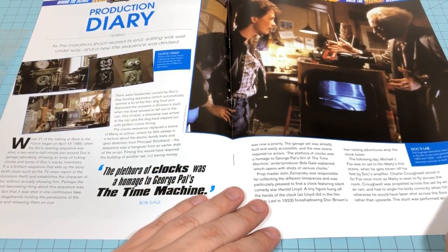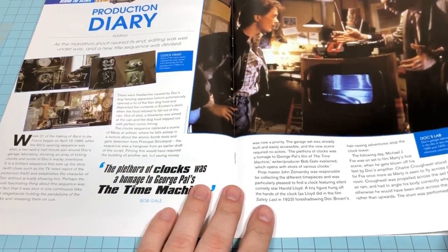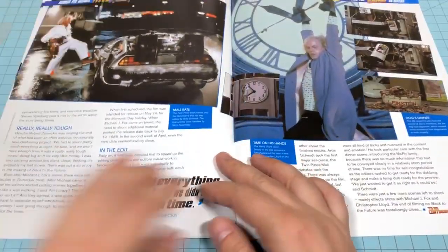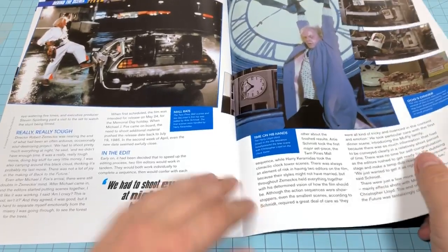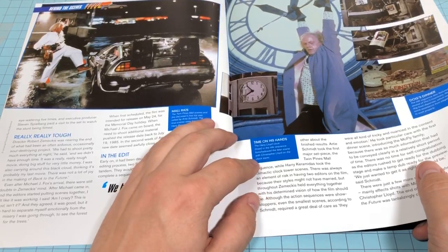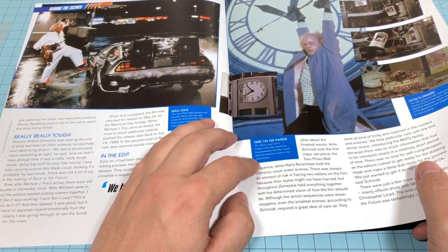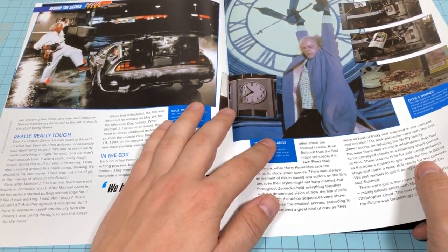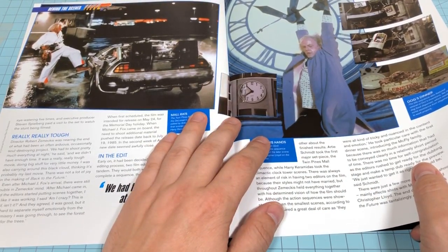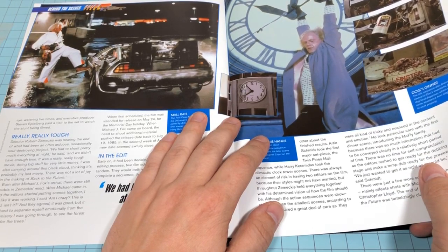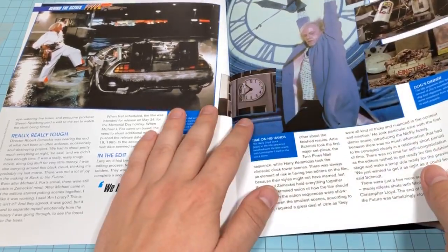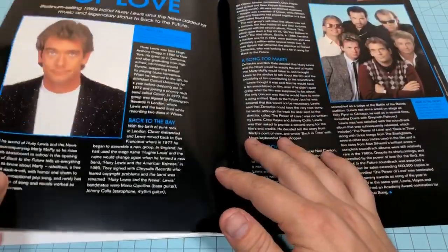Production diary. Looks like they have a little article on all the cuckoo clocks in Doc's lab. The mall looks like up on the, kind of foreshadowing of him being up on the clock tower. The Rube Goldberg that he has to put down Einstein's food every day.